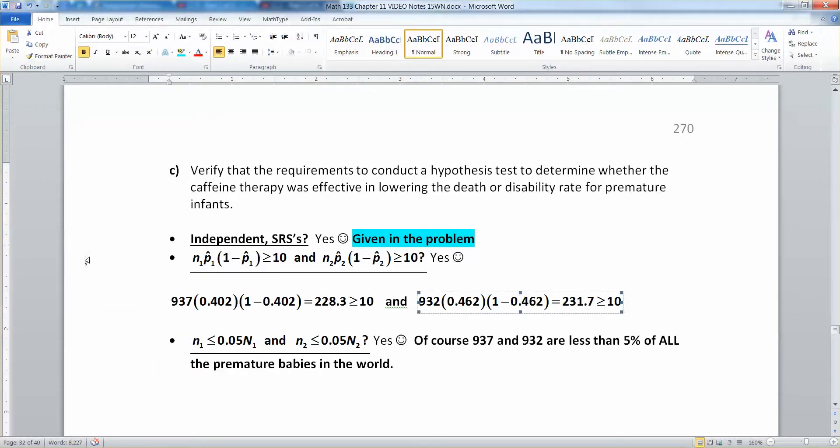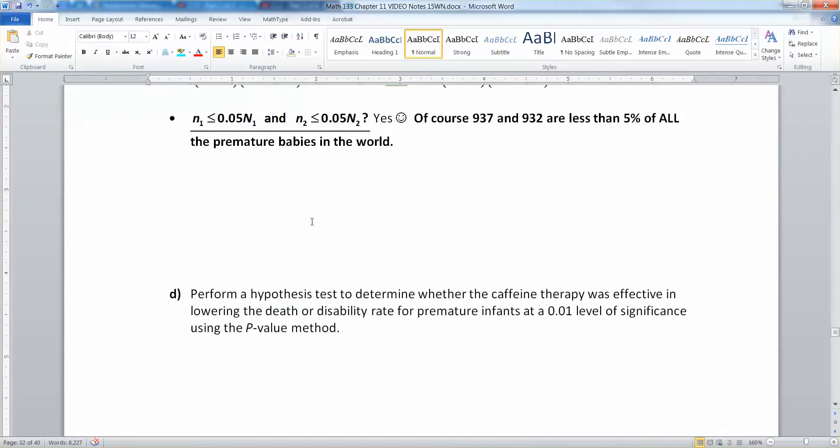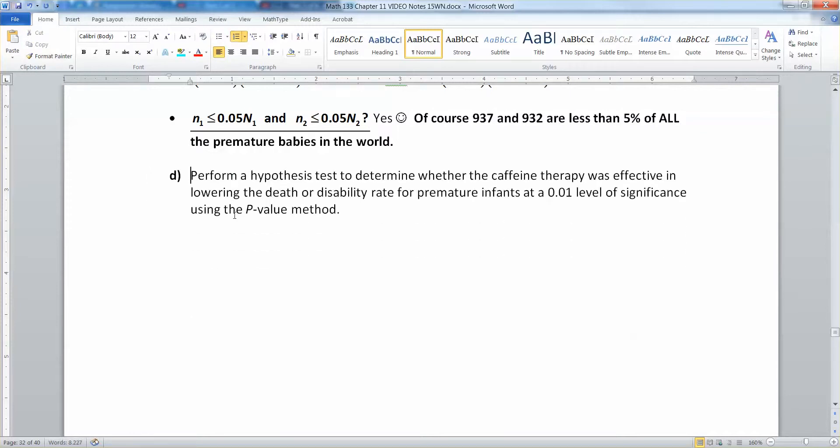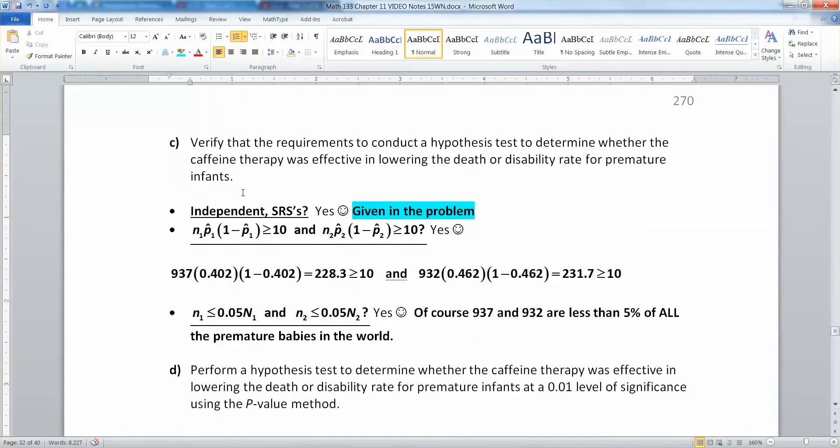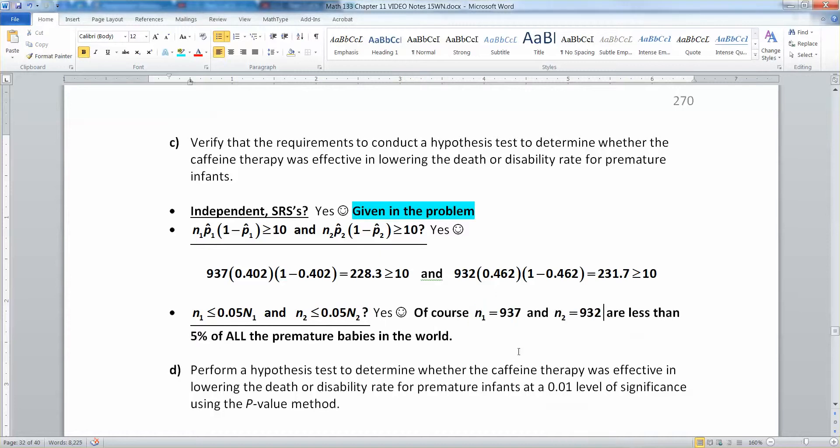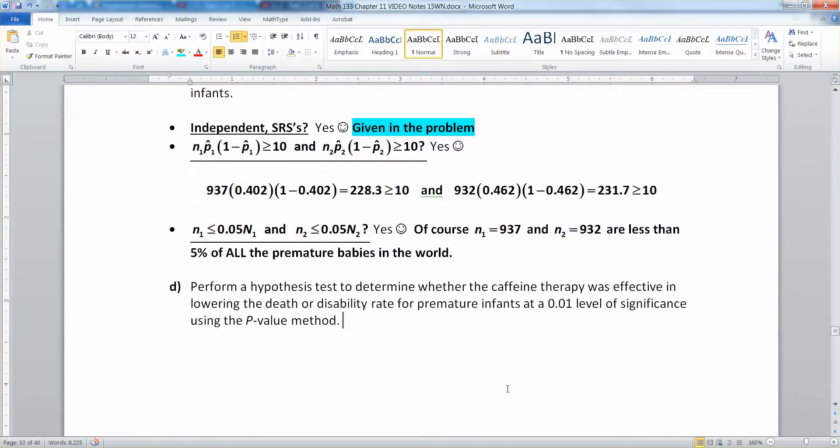Last but not least, we need little N1 to be less than 0.05 capital N1 and little N2 to be less than 0.05 capital N2. As per usual, we're going to wave our hands at this a little bit and say, well, of course it is. We're talking about the number of premature babies in the whole world, so 937 for N1 and 932 for N2 are going to be well below 5% of all the premature babies in the world. That means we've met our requirements, so now we're ready to conduct the hypothesis test.